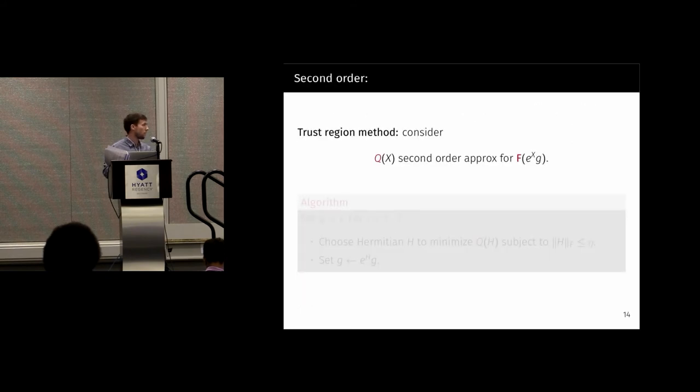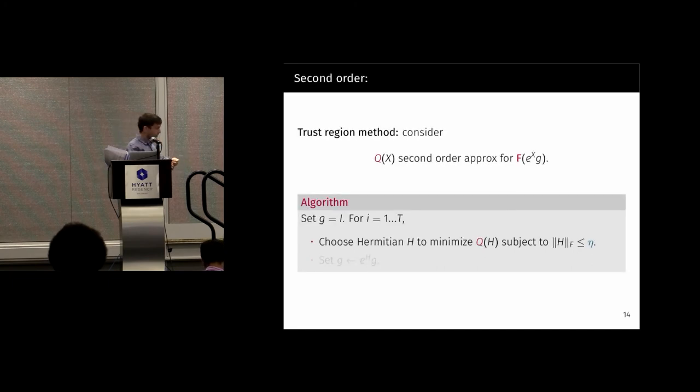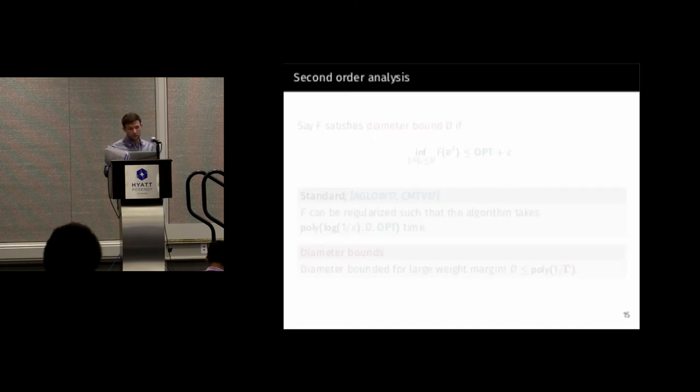The second order method, I don't want to get too in-depth about it, but now we're not just trying to get the gradient to be small. We're actually trying to optimize this function. And we're going to use something called a trust region method, where we consider a second order approximation for f of e to the xg. So that's a quadratic approximation. And the algorithm is quite simple. We, at each step, choose a Hermitian which minimizes this quadratic form, subject to it being small enough. So we want to minimize it over a small ball. And then we just go in that direction. So it's like, at each point, you look at a ball around you, you approximate the function, you go to the least, and then you just keep doing that again.